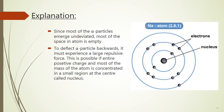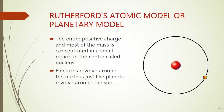From the observations of the experiment, Rutherford explained that since most of the alpha particles emerge undeviated, most of the space in an atom is empty. Also, to deflect an alpha particle backwards, it must experience a large repulsive force. This is possible only if the entire positive charge and most of the mass of the atom is concentrated in a small region at the center — the nucleus.